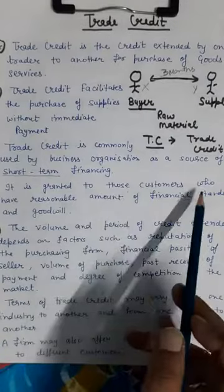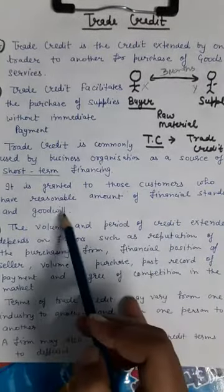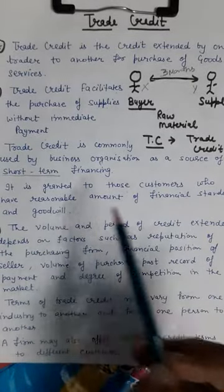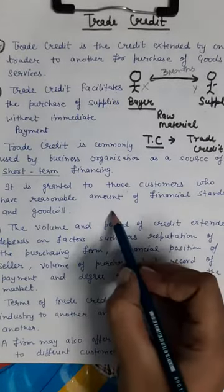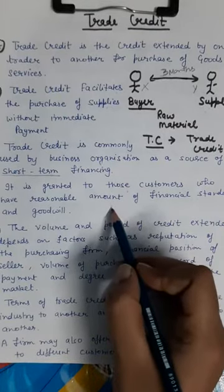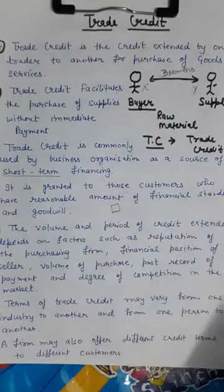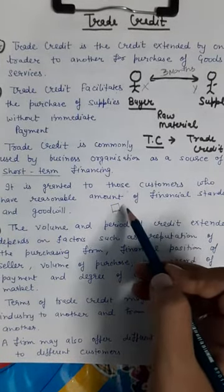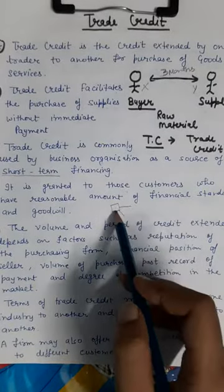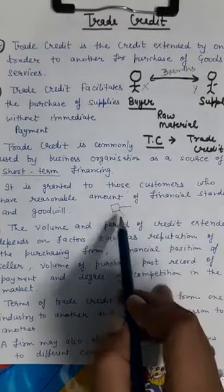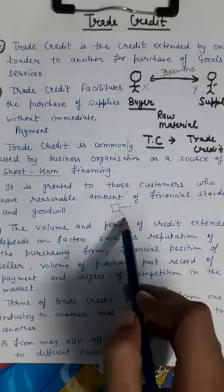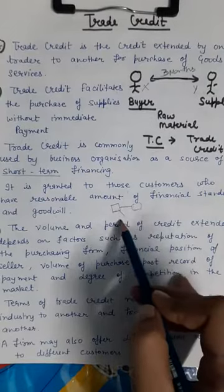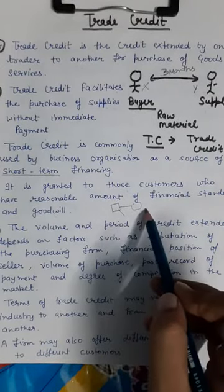Trade credit is granted to those customers who have a reasonable amount of financial standing and goodwill. Generally, it is given to customers who have a good reputation and goodwill in the market. For example, if I go to a shop and say I will pay later, the shopkeeper may agree because my family has a good reputation in the market.